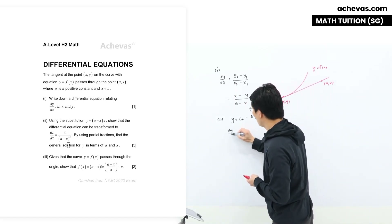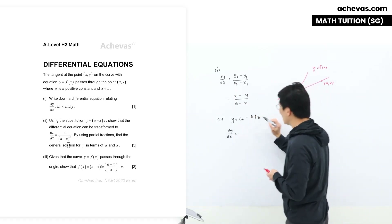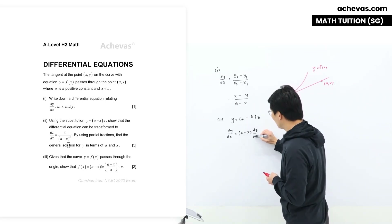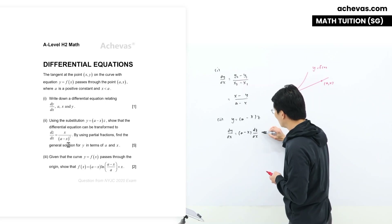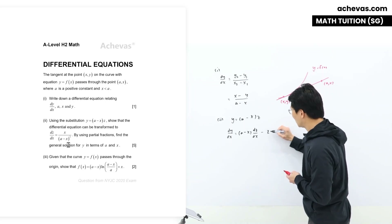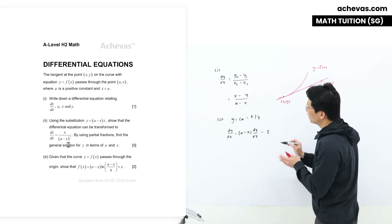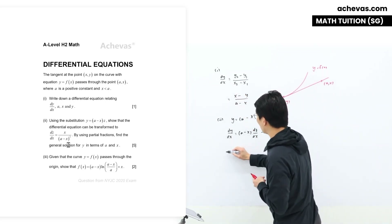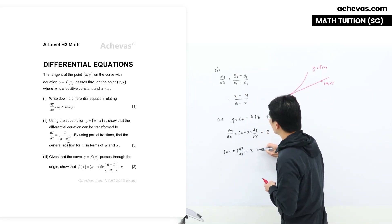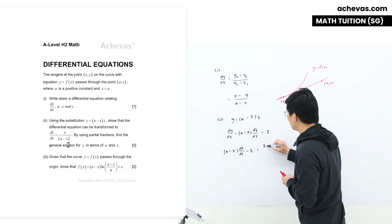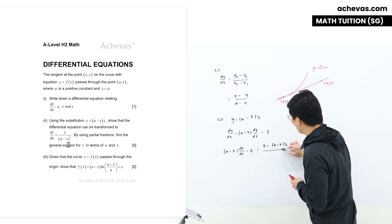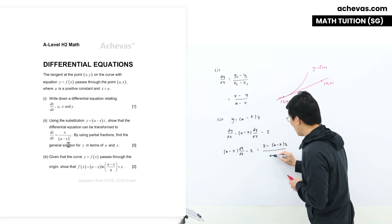I'm going to differentiate with respect to x first in order to get a term of dy/dx, so that I can do a replacement for this term. Let's do implicit differentiation with respect to x. We have dy/dx. I'm going to make use of the product rule: keep (a - x), differentiate z to get dz/dx; then keep z, differentiate (a - x) to get minus z.